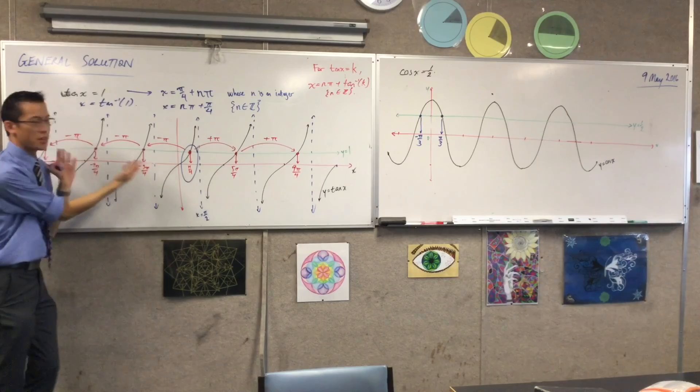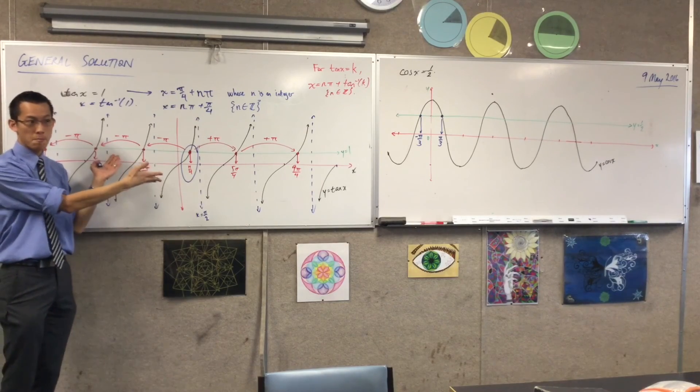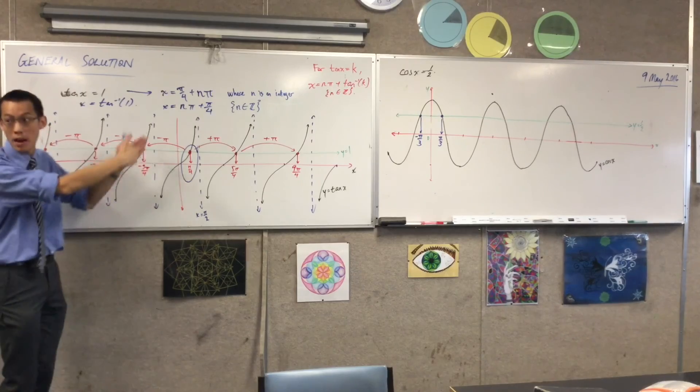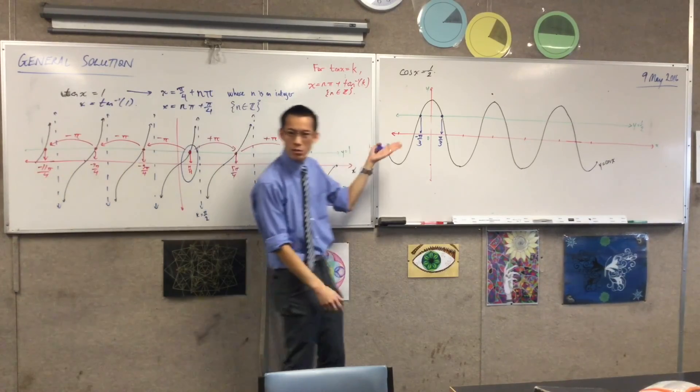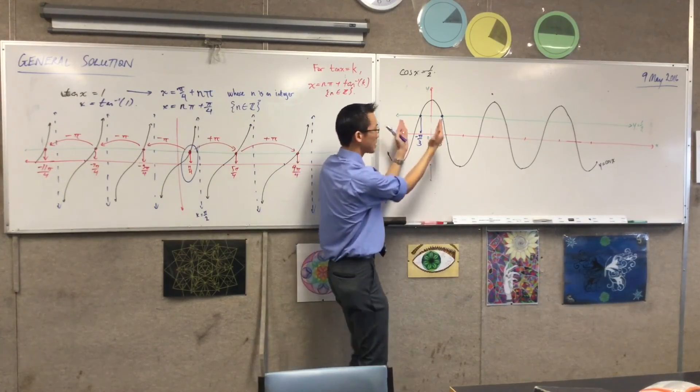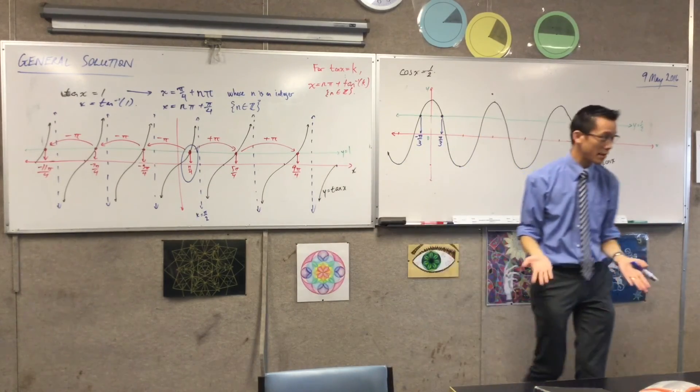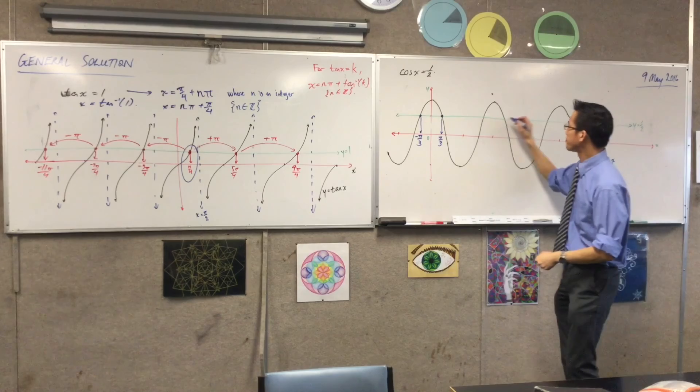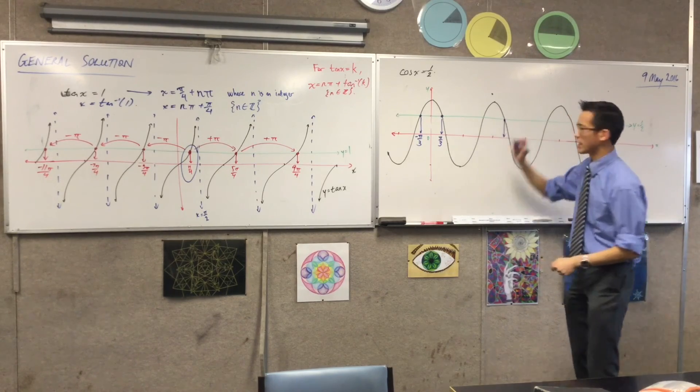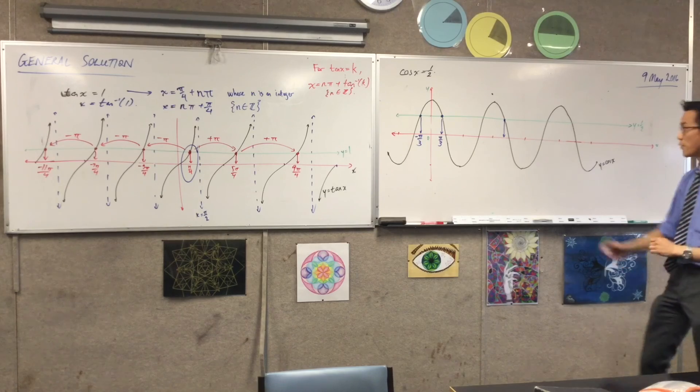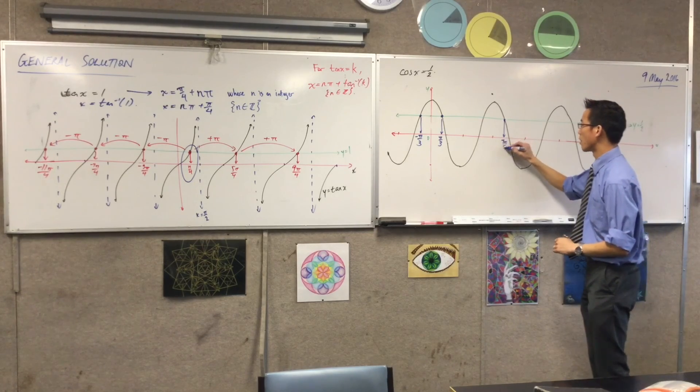The period here was π radians. So, that's why I went π radians, π radians, π radians. But the period here is 2π radians, as you just mentioned. So, I'm going to take both of these guys and just go forward 2π radians. Does that make sense? So, you can see here, we'll do this one because it's the easy case. 2π is 6π/3. So, therefore, this will be 7π/3.